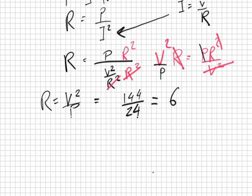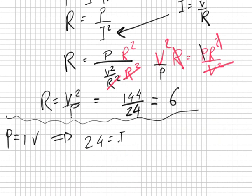So you said P equals IV. So that means 24 equals I times V. What's V? 12. So that means I equals 2. And then you have V equals IR. So R equals V over I, which would be 12 over 2, which is also 6.